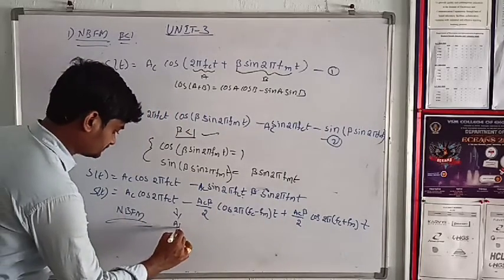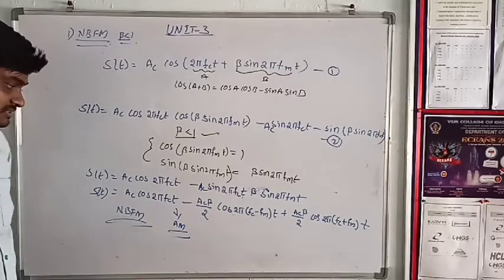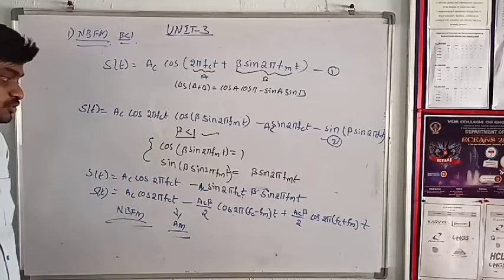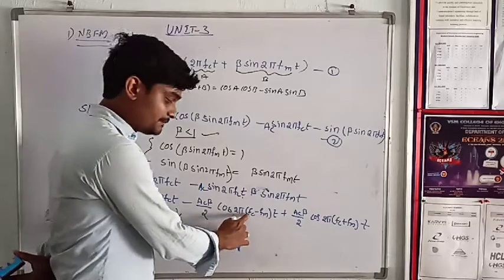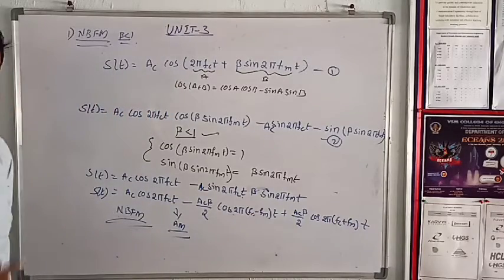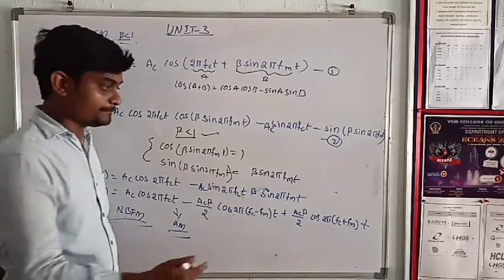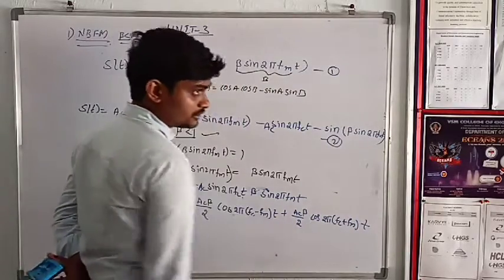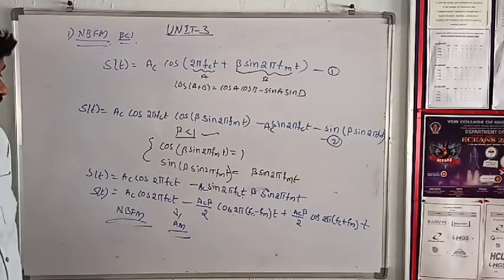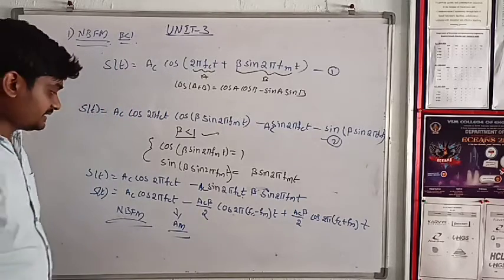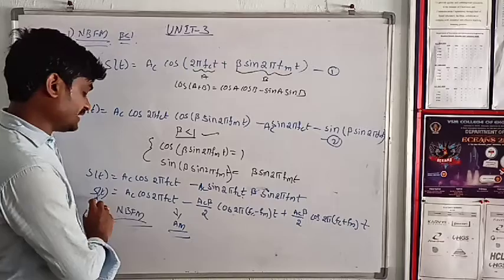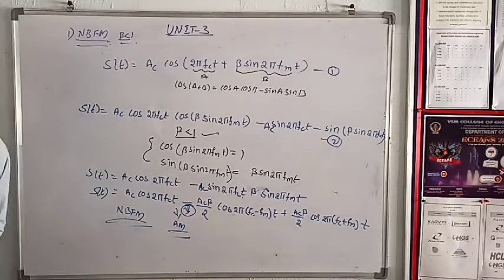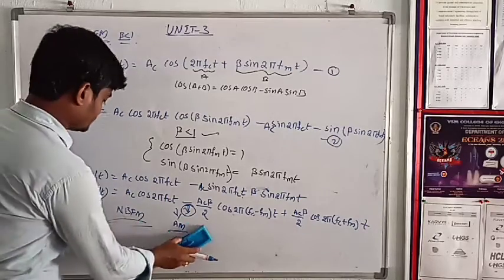This is similar to standard AM. Standard AM is also AC cos 2 pi FC minus mu AC by 2 cos 2 pi FC minus FM into t plus mu AC by 2 cos 2 pi FC plus FM into t. So carrier frequency, upper sideband and lower sideband. The difference here is that NBFM lower sideband is negative.